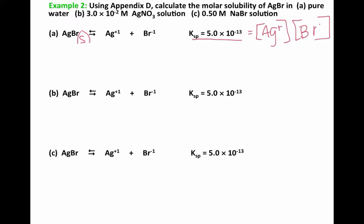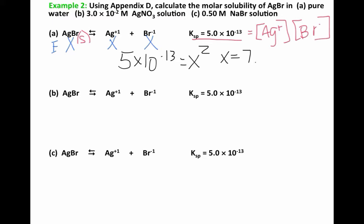It wants us to find the molar solubility of AgBr. If we think about the last row of our ICE table, at equilibrium we have X moles per liter of silver bromide, which means, based on coefficients, we have X for Ag+ and X for Br-. So plugging into our Ksp: 5 times 10 to the negative 13 equals X times X, which is X squared. Taking the square root, X equals 7.1 times 10 to the negative 7th molar.